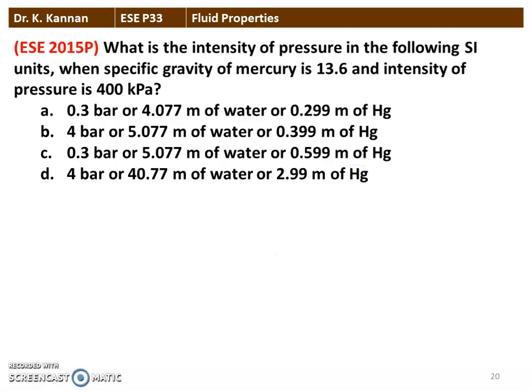Next question from the 2015 question paper. What is the intensity of pressure of 400 kPa expressed in different SI units, given that the specific gravity of mercury is 13.6? There are four options expressing pressure in bar, meter of water column, and meter of mercury column. We calculate the pressure in each unit.